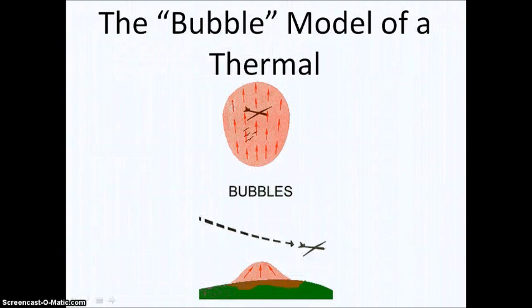Bubble thermals. What happens is the land here heats faster than the land around it, like a regular thermal. But what happens is it heats, heats, heats. And then there's this bubble rising. You have this cold air rushing in. You have this air rising, this cold air rushing in.